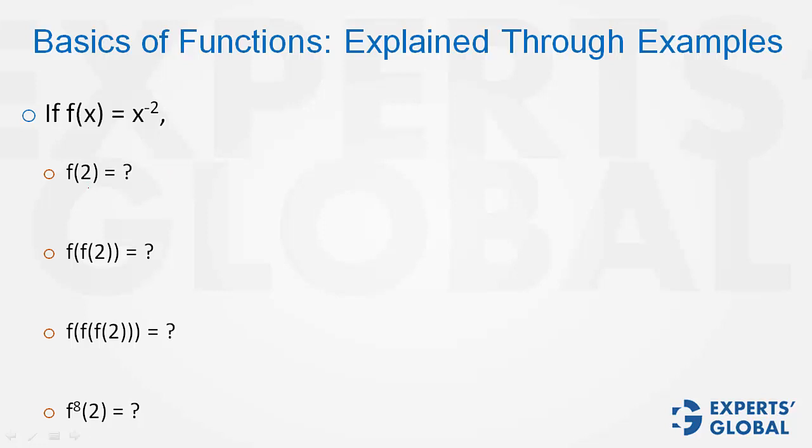The first question is very simple. f(2), we just have to replace x with 2. f(x) is x raised to power minus 2. So f(2) becomes 2 raised to power minus 2. The answer is 1 upon 4.